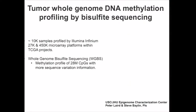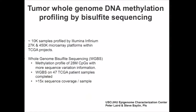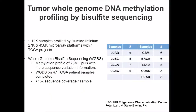But today I'm going to be talking about a completely different platform, namely whole genome bisulfite sequencing, which gives us a profile of 28 million single CpGs with more sequence variation information. We completed the sequencing on 47 TCGA patient samples with, on average, 15X sequencing per sample, and as you can see in the table, we have a set of nine cancer types.